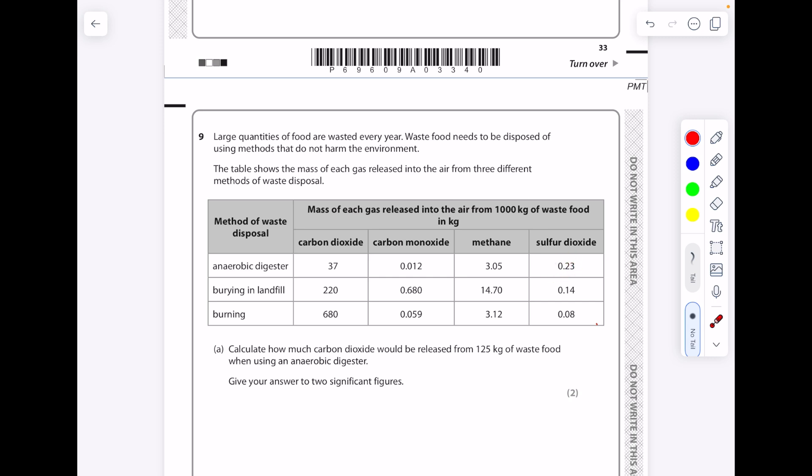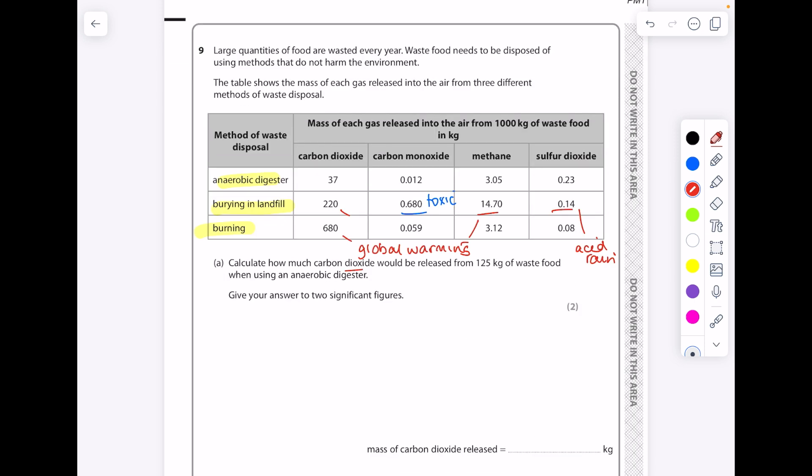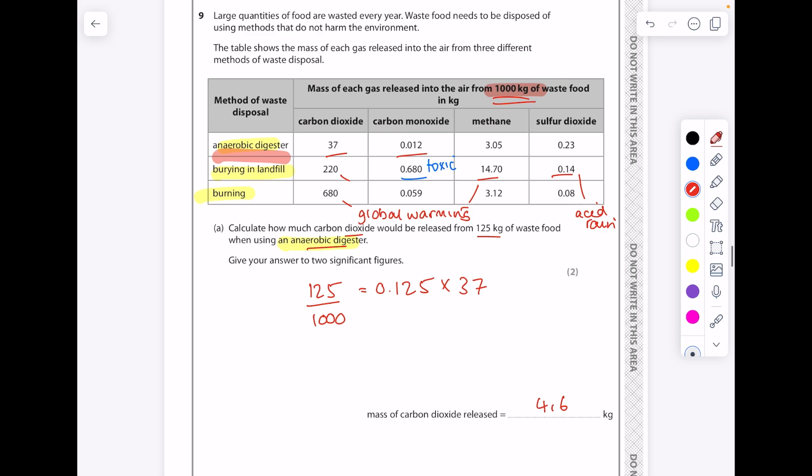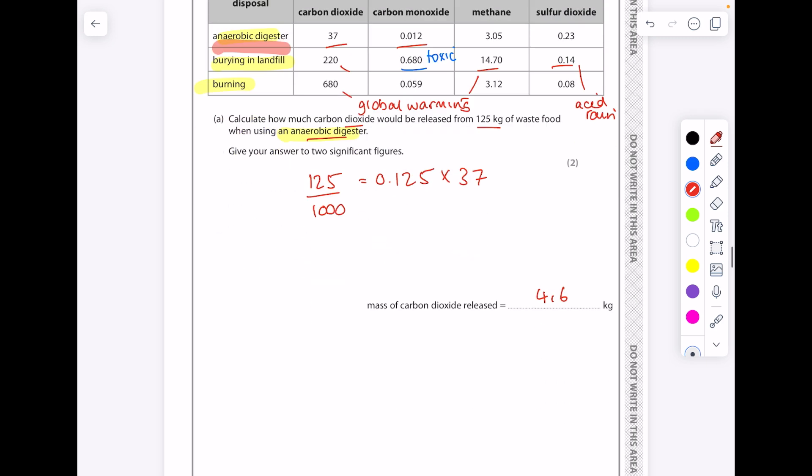Burning produces the most sulfur dioxide and remember sulfur dioxide is responsible for causing acid rain, so that's a big no-no. Calculate how much carbon dioxide would be released from 125 kg of waste food when using an anaerobic digester. In order to solve this we take the 125 kg of waste food, we divide it by the 1000 given in the question to get 0.125, and then you multiply it by the mass given in the question for CO2. That gives us an answer of 4.6 kg of CO2 released from 125 kg of waste food.